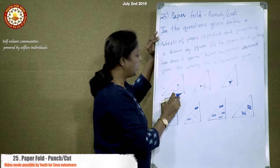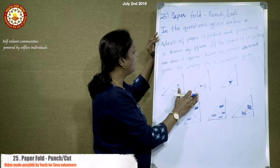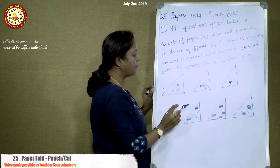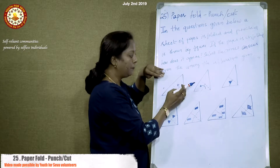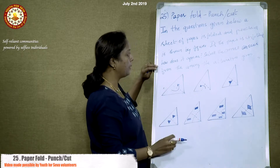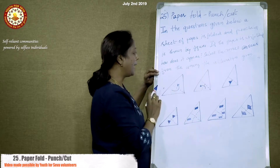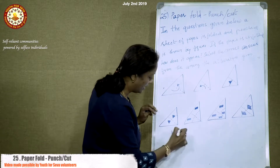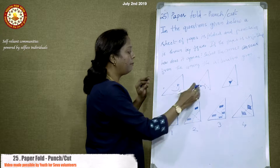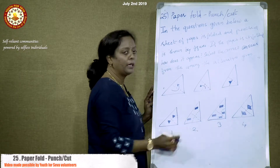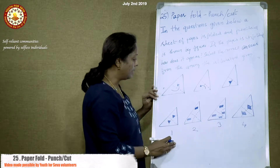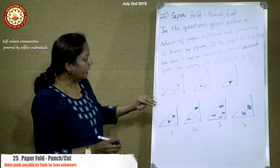In the questions given below, the sheet of paper is folded as shown in the figure and then it is punched. If the paper is unfolded after folding and punching, how does it appear? Select the correct answer among the given alternatives. There are four alternatives given. Once the paper is folded and punched, we have to unfold it and see how the punched paper looks.